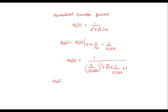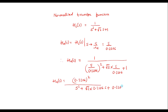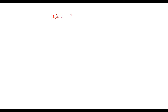Simplifying, Ha(s) = 0.2206² / (s² + √2 × 0.2206·s + 0.2206²) = 0.0486 / (s² + 0.319s + 0.0486). This is the desired analog filter.